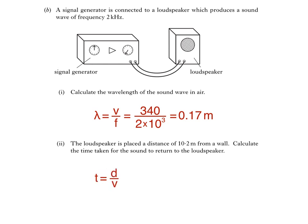Now the important thing here is that we're being asked to calculate the time for the sound to return to the loudspeaker. That means it's going to travel 10.2 meters from the loudspeaker to the wall, then another 10.2 meters back again. So the total distance is 20.4 meters. Time, then, is 20.4 divided by 340, which is 0.06 seconds.